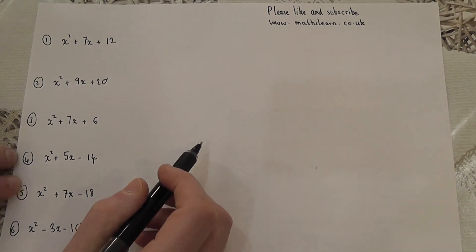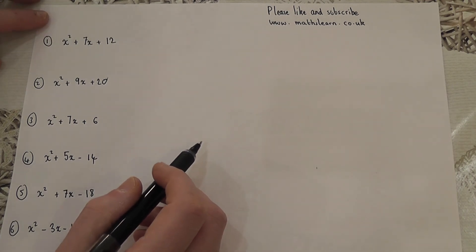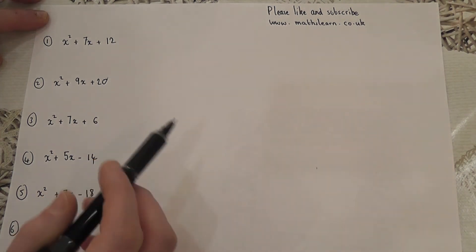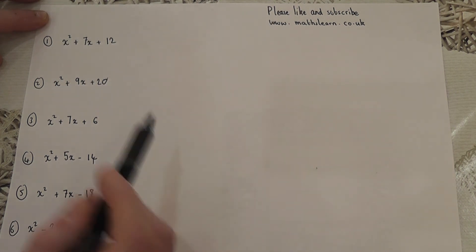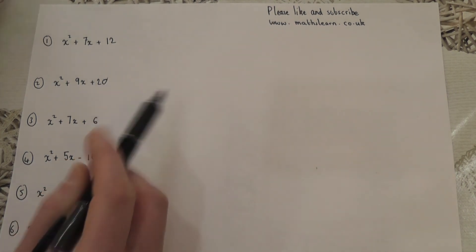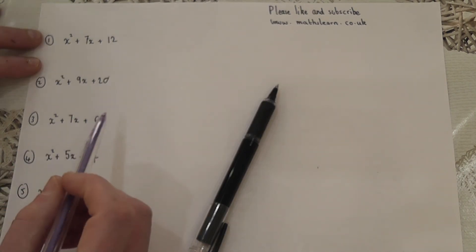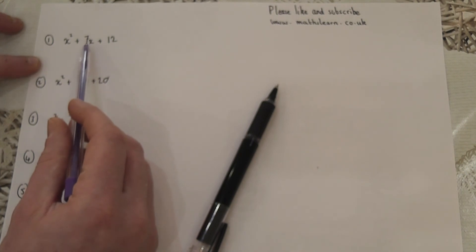This video reviews a range of factorizing into double or two brackets. Please do like and subscribe, and also if you go to mathslearn.co.uk you'll see my videos compiled together into a logical order. So factorizing into two brackets. Simple trick: we're going to find two numbers which times to make the end number and add to make the middle number.